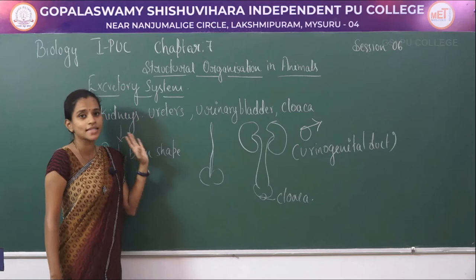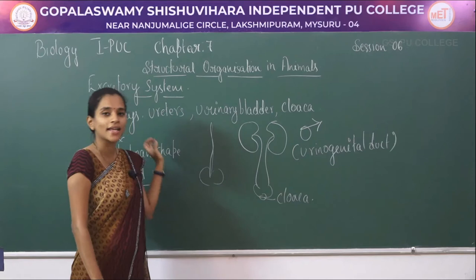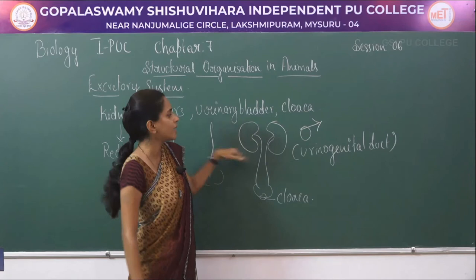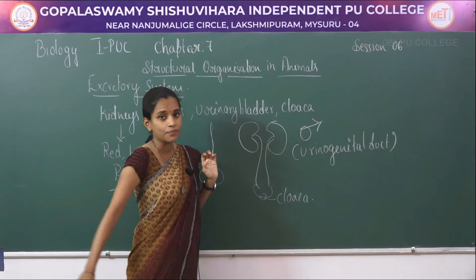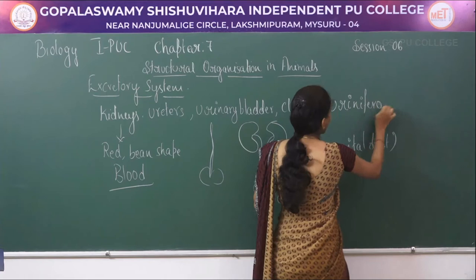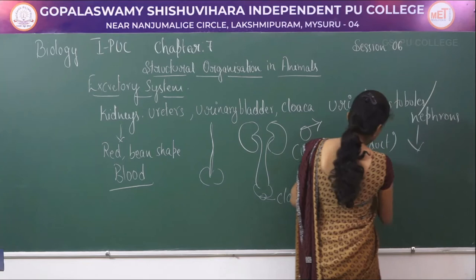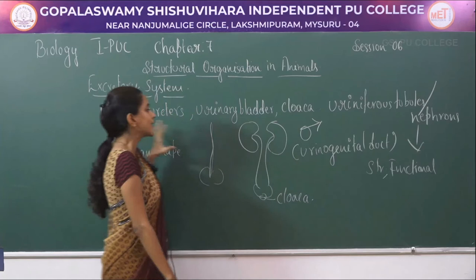In the excretory system, blood carries the waste substances into the kidney. In the kidney, blood is separated from the waste substances — blood is returned back into the frog's body while the waste substances are retained in the kidney for purification. The structural and functional units of the kidney are called uriniferous tubules or nephrons.